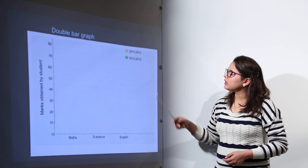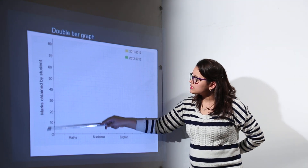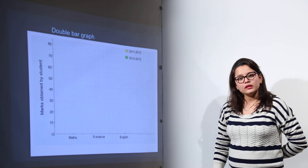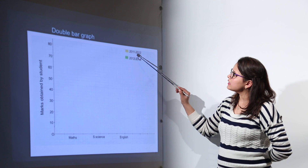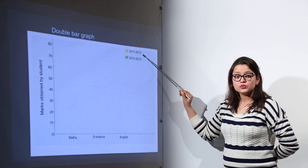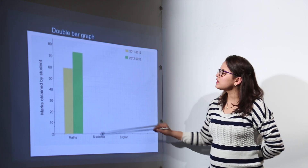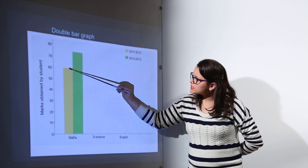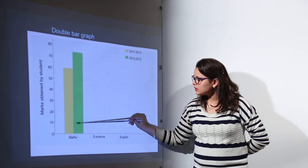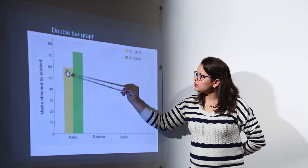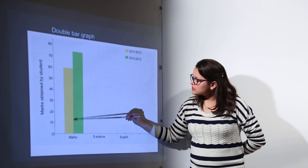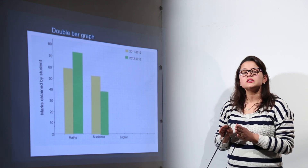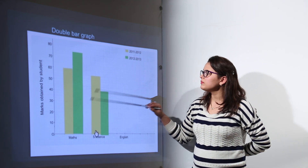The next example is a double bar graph. Here we will be dealing with marks obtained by students, where the subjects are written on the x-axis and the marks obtained are written on the y-axis, the same way as done earlier. The yellow bars represent the data for 2011-12, whereas the green ones represent data for 2012-13. The 2011-12 data shows that in maths the student secured 60% marks, whereas in 2012-13 the student secured 75% marks. You can compare the performance of students in both years — in one year the student did not perform as well, but in the next year the student performed better.